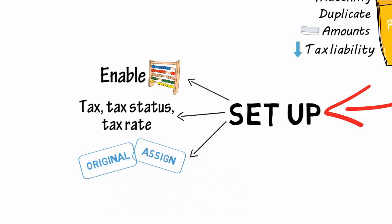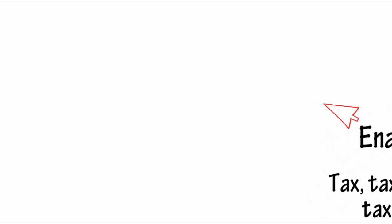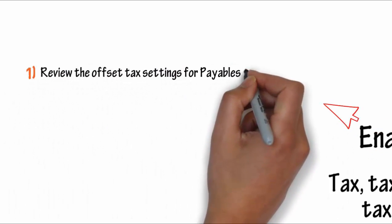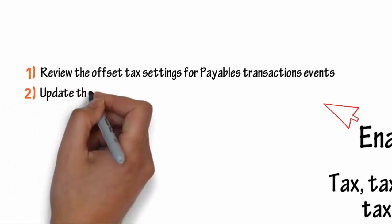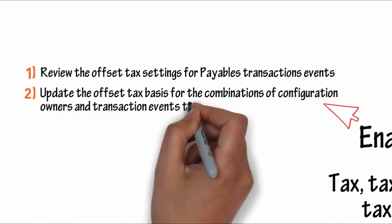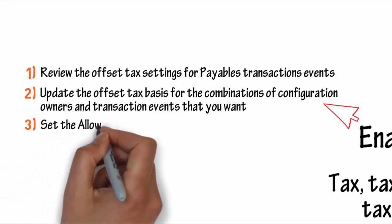Perform these tasks to enable offset tax calculations. First, review the offset tax settings for payable transaction events. Second, if applicable, update the offset tax basis for the combinations of configuration owners and transaction events that you want. And third, set the allow offset taxes option for the applicable third parties.